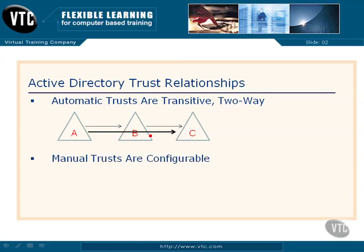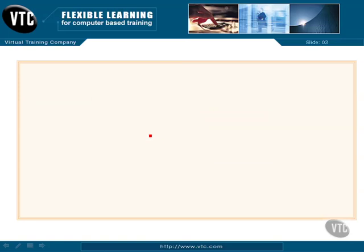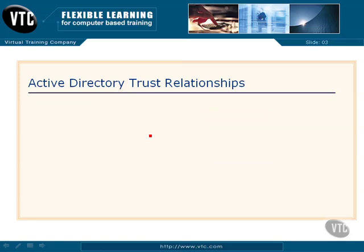Now, the manual trusts that we can set up are configurable. We can make them to be non-transitive, or we can make them one- or two-way, whichever we'd like to have them. When would we set up our own trusts, and why would we do that?